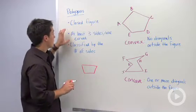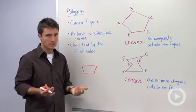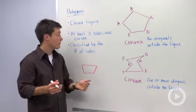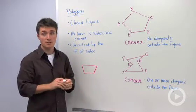The second thing about polygons is that it has at least three sides. If you have less than three, you can't close any figure, and none of those sides are curved.